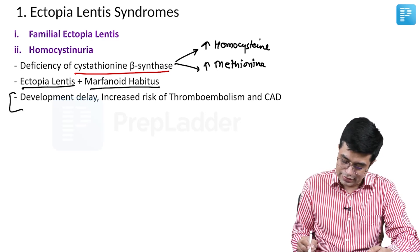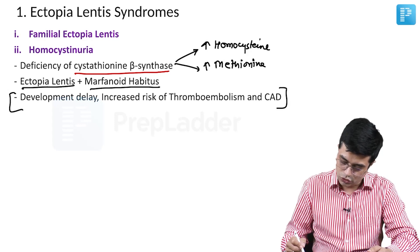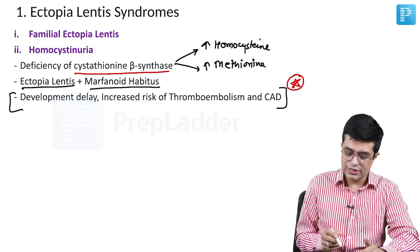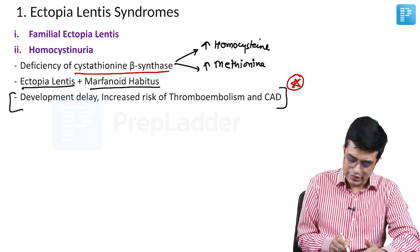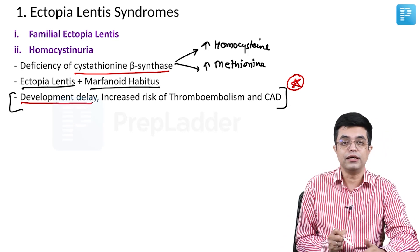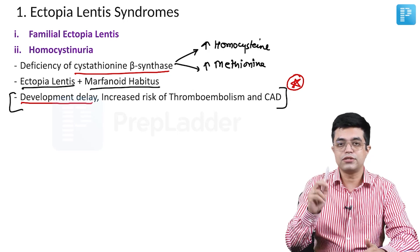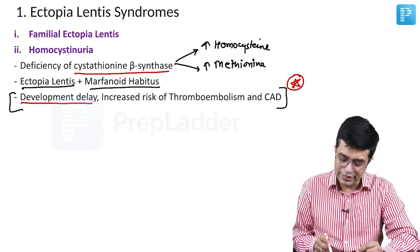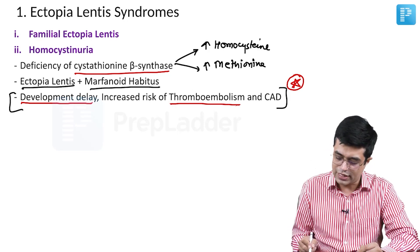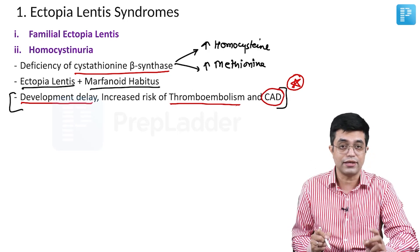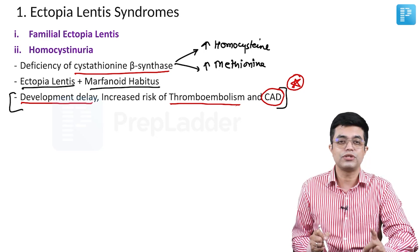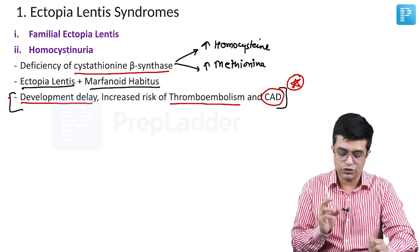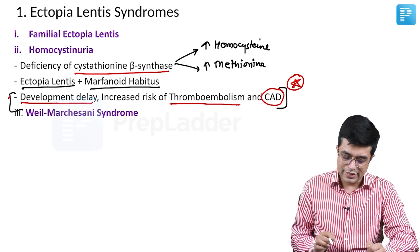The differentiating features of homocystinuria from Marfan syndrome are: Marfan syndrome patients have a normal IQ, whereas these children will have developmental delay. Marfan syndrome does not have increased risk of atherosclerosis or embolism, but homocystinuria patients have increased risk of thromboembolism, coronary artery disease, acute MI, and stroke. That is what is different in homocystinuria.